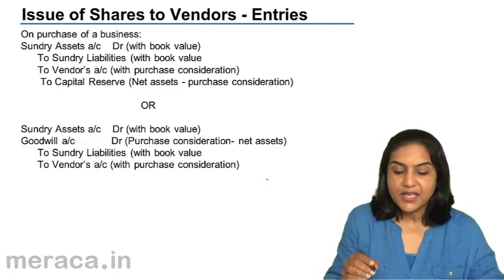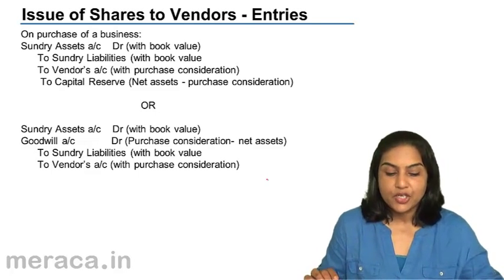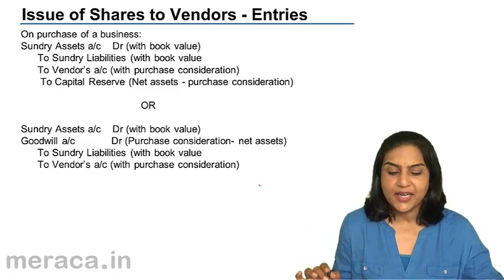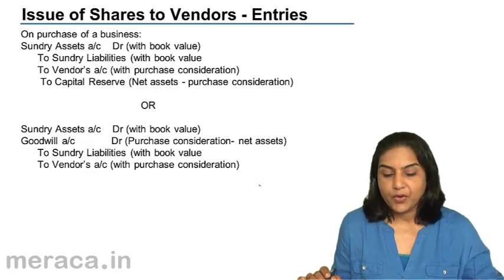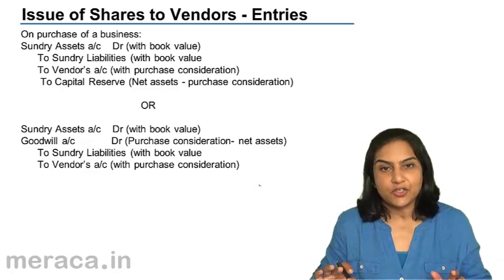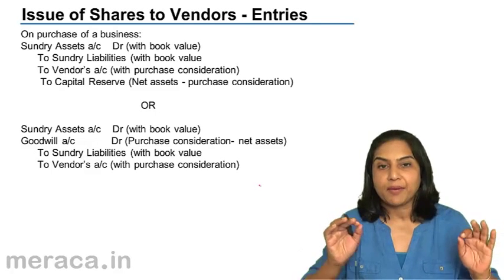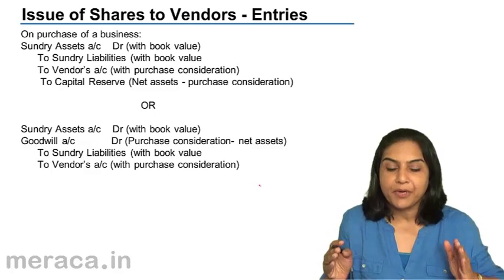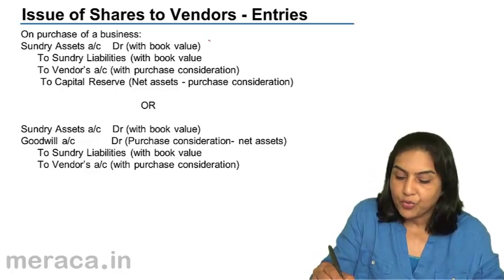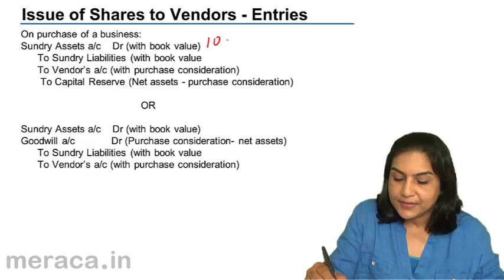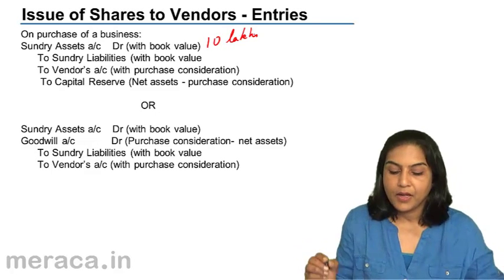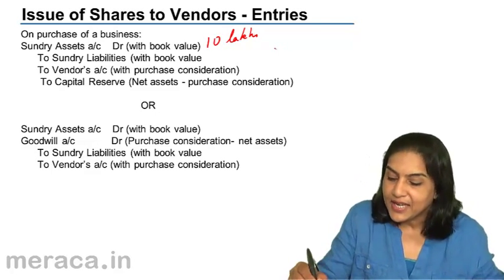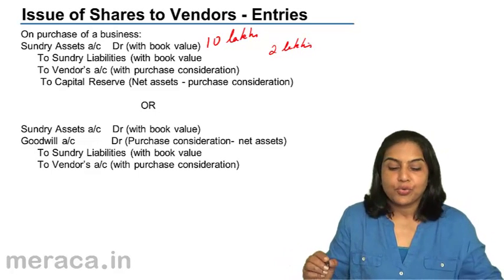Once more, on purchase of a business: sundry assets account debit, sundry liabilities debit, vendor account credit, capital reserve credit — all with the relevant values. Let us take an example. Suppose we take over sundry assets of a business — plant, machinery, furniture, etc. The total book value at which the company is going to record in its books is, let us say, 10 lakhs. When it takes over the business, it also takes over certain liabilities — let us say the liabilities are 2 lakhs.